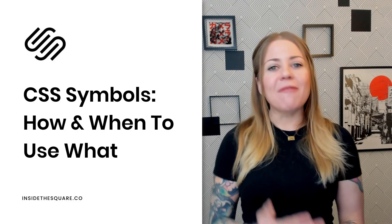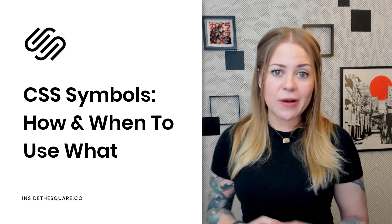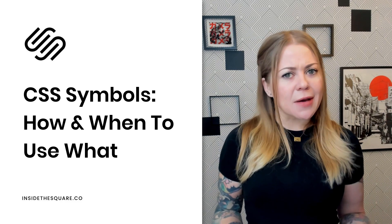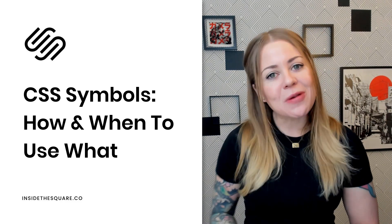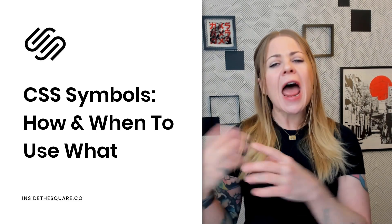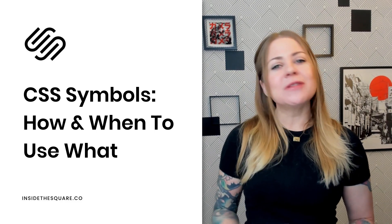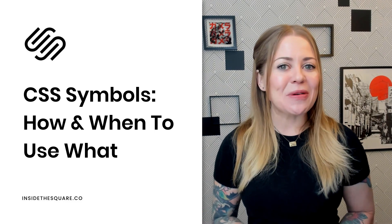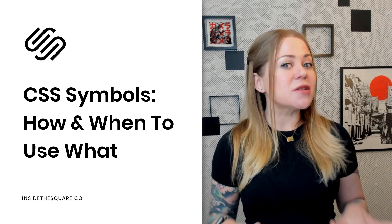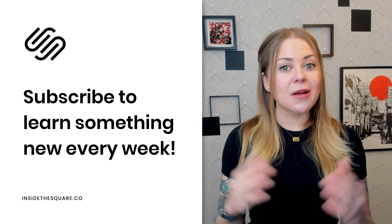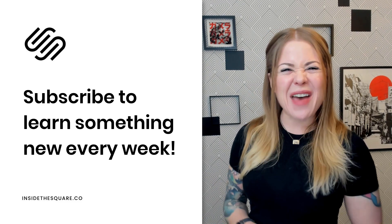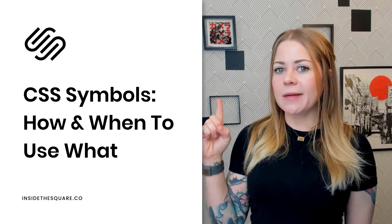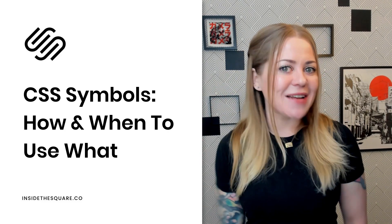So that's it for my overview of the most common symbols you're going to encounter when creating custom code for your Squarespace website. There are more symbols used in CSS, but these are the most common ones I wanted to make sure you understood how and when to use them. If there are other symbols you use in your code that I didn't mention, let me know in the comments below — I'll have to do a second version. Be sure to subscribe to my YouTube channel for free trainings like this every single week. Thank you so much for watching. I hope you learned something awesome, and have fun with your Squarespace website!